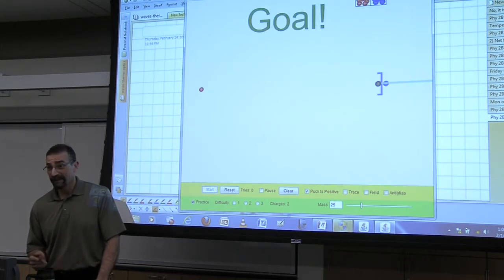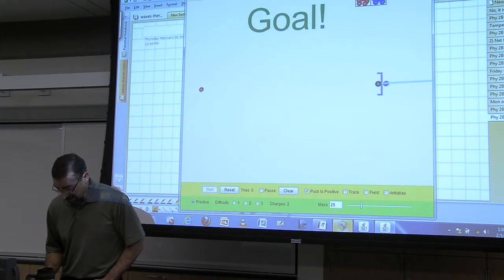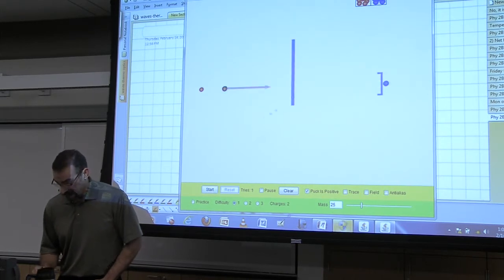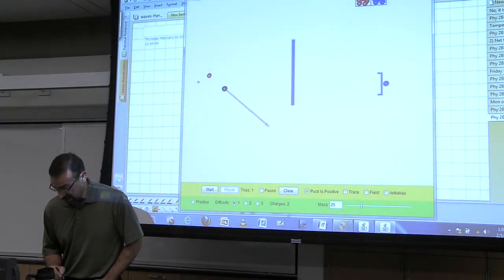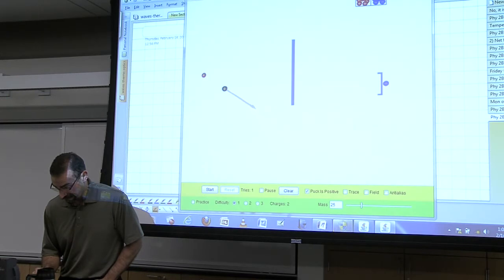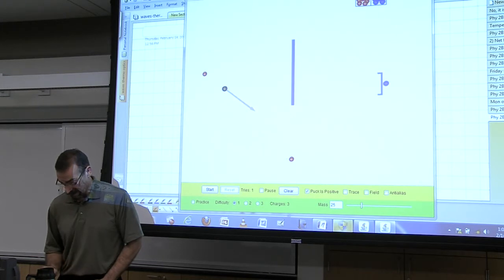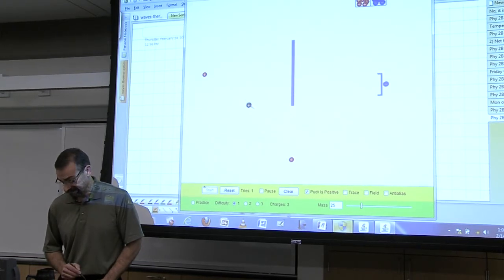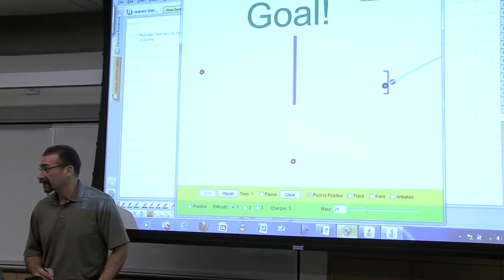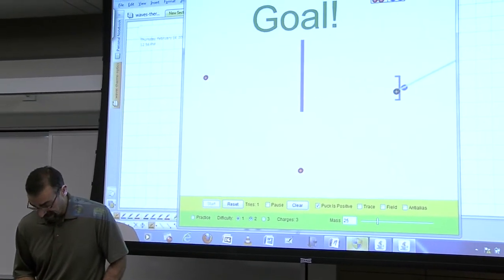Now that one was pretty straightforward. Let's increase the difficulty a little bit. Let's put an obstacle in the way. So now what do you do? You maybe put a positive charge over here. Those repel each other. And maybe we put a positive charge over here. And should we see what happens? Okay. And you go to the next level.